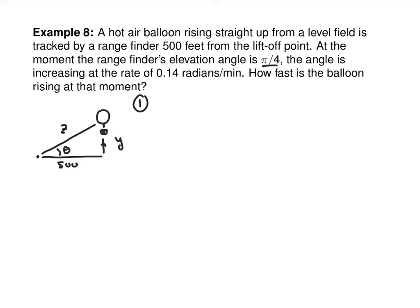At the moment the rangefinder's elevation angle is pi over 4, the angle is increasing at a rate of 0.14 radians per minute. So what rate is that? d theta/dt equals 0.14 radians per minute — look at the units, it's talking about how fast the angle is changing. What do you want to find? How fast the balloon is rising — that's dy/dt. Specifically when theta is pi over 4.